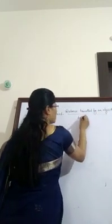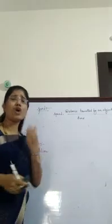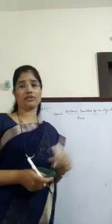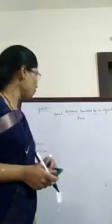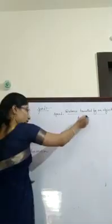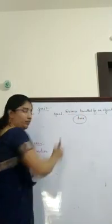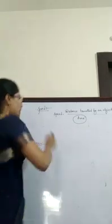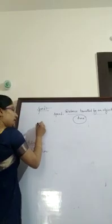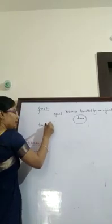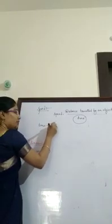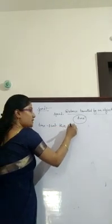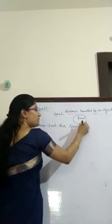Students, please revise this topic. The topic is speed. The formula is: speed equals distance travelled by an object divided by time. For the definition — if we take the time as one unit, then speed is equal to distance.